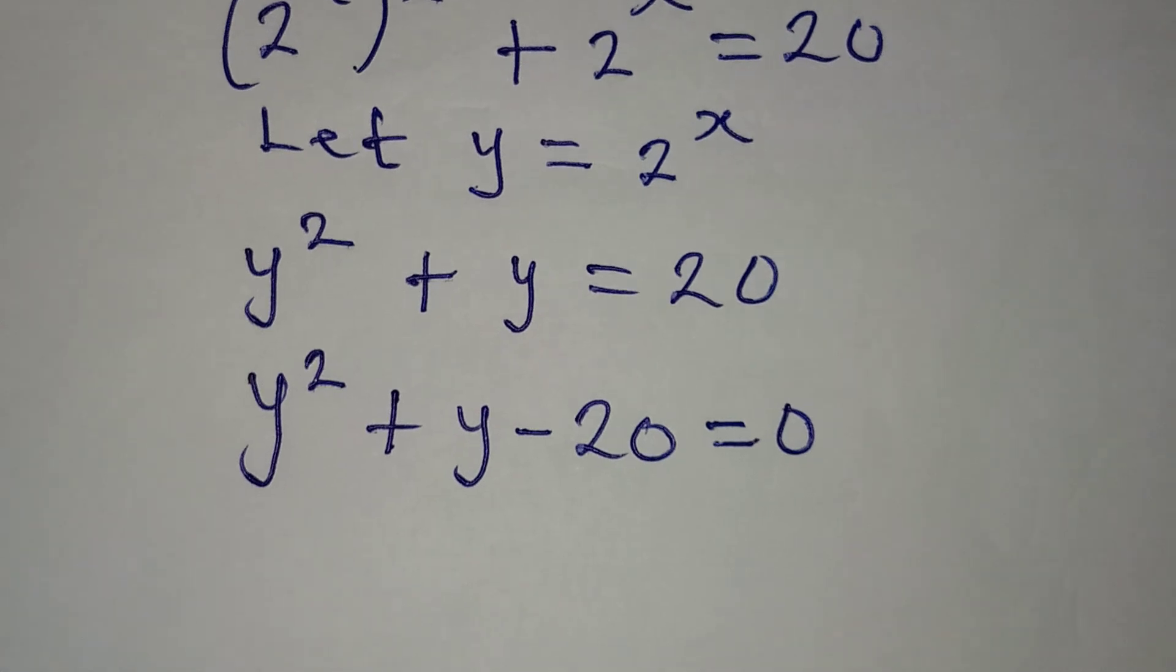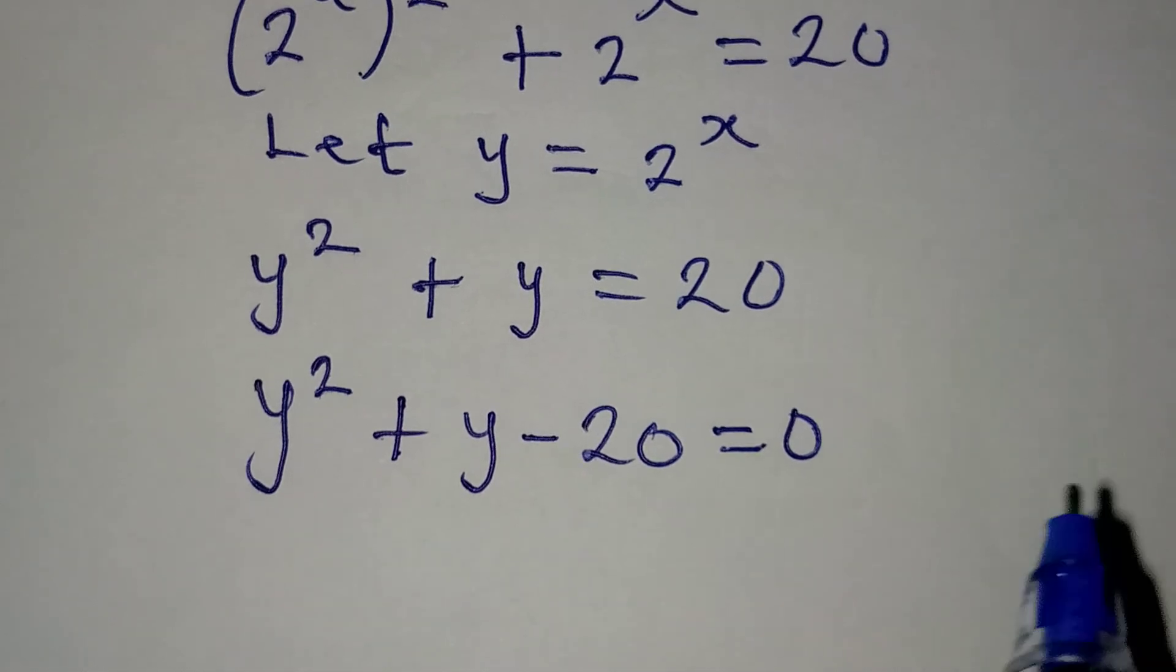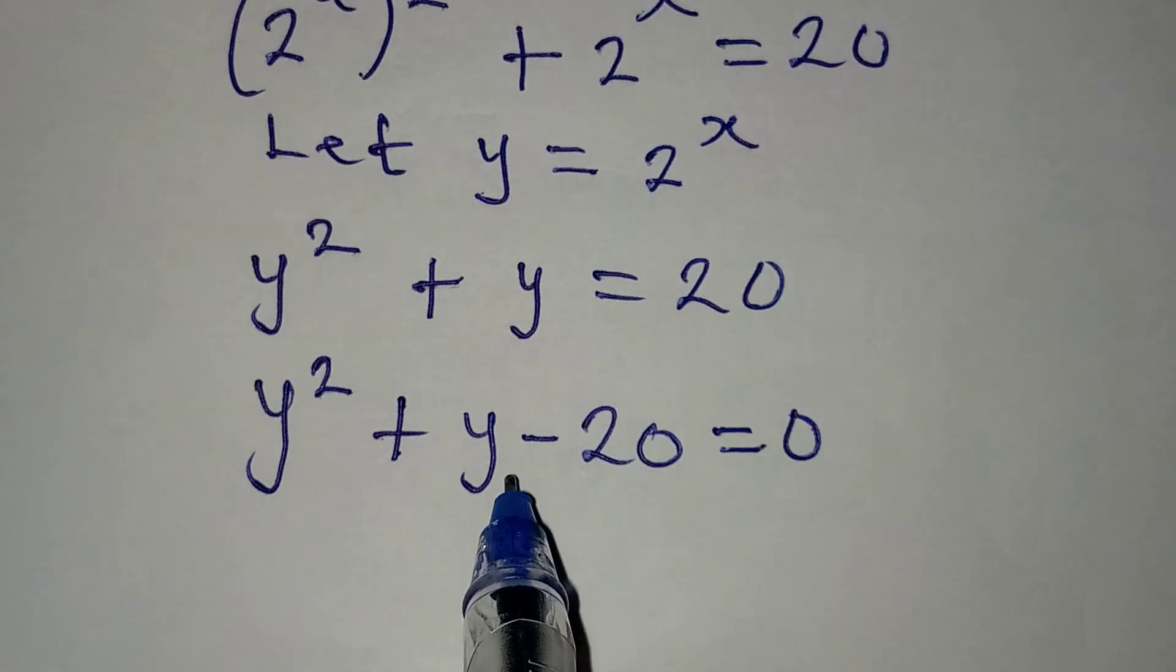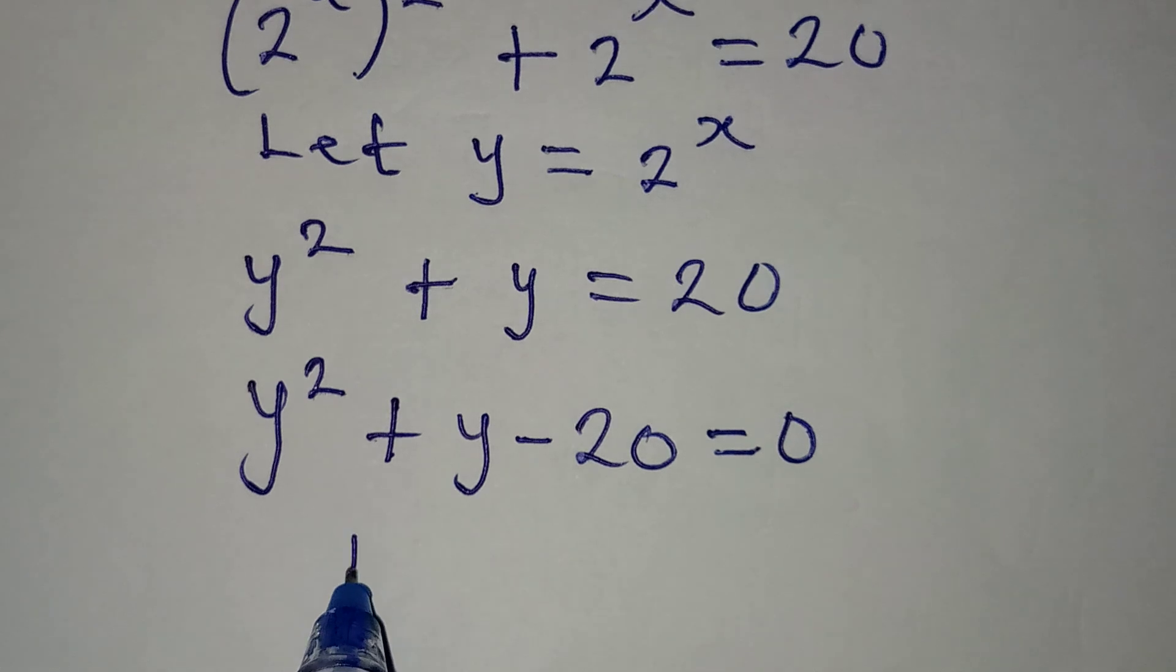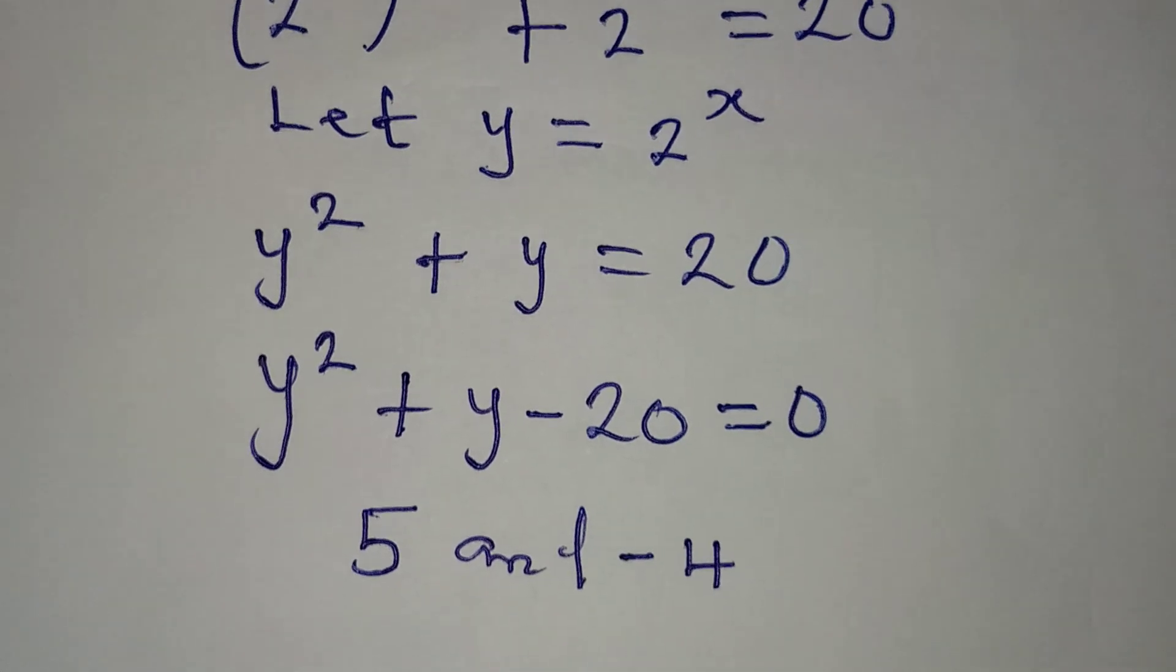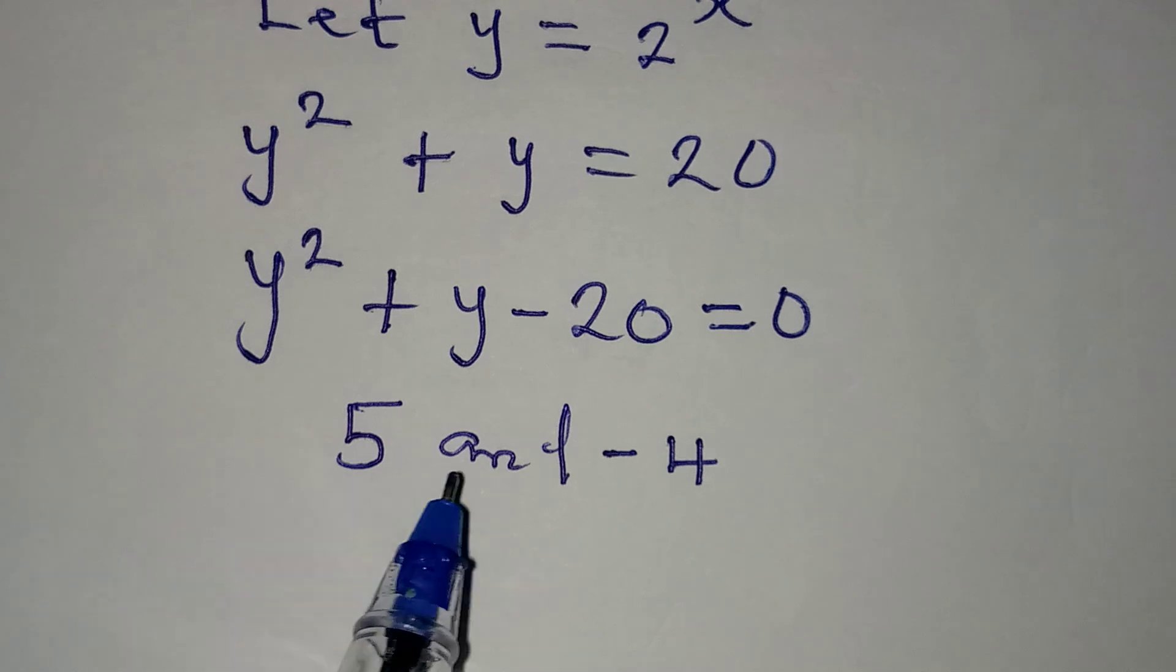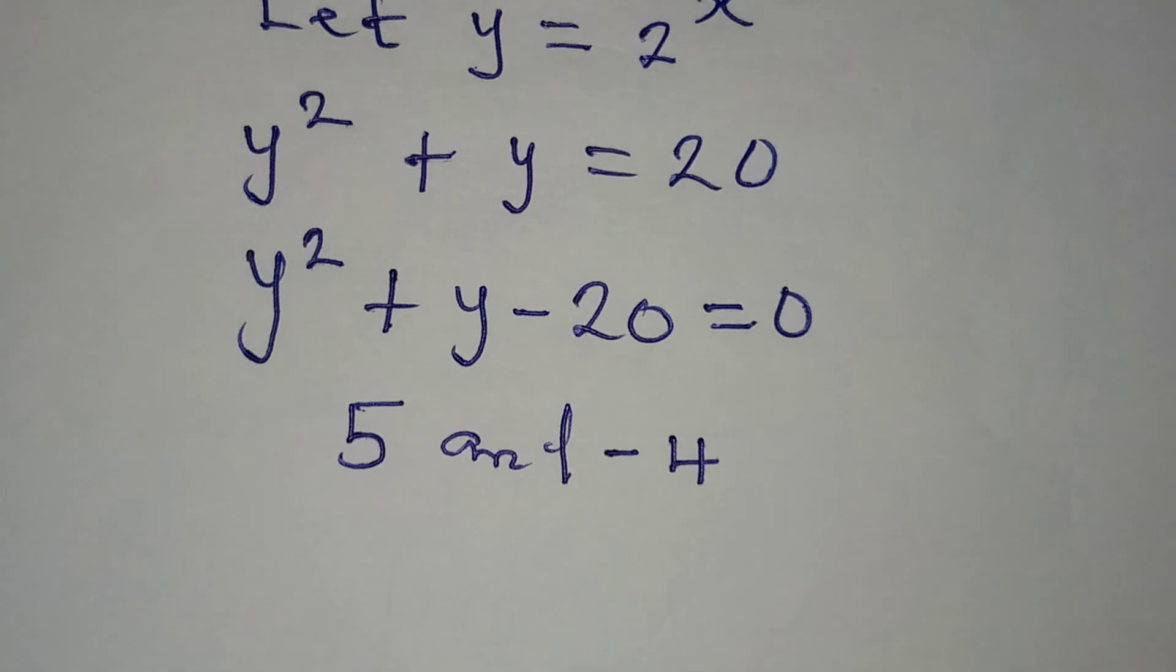What method do we use for this? We can use factorization method for this, and it's going to be very fast. Because we look for two numbers to multiply to get minus 20, and the two numbers will be 5 and minus 4. 5 times minus 4 is minus 20, and 5 plus minus 4 will give us 1, and 1 is the coefficient of y.